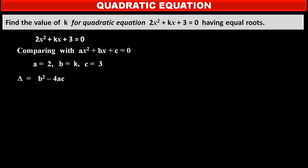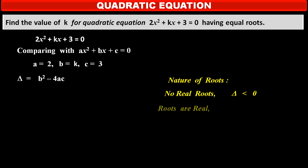We know the formula of discriminant delta, which is equal to b² minus 4ac. We know the rules of the nature of roots related to the discriminant. If the equation has no real roots, then the discriminant delta is less than 0, meaning it is negative. If the roots are real numbers, then the discriminant delta is greater than or equal to 0.